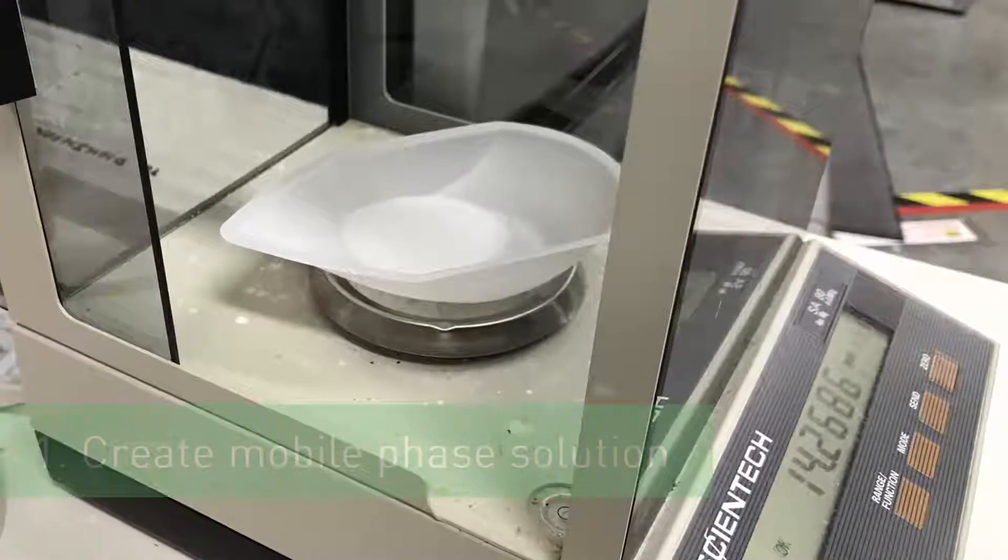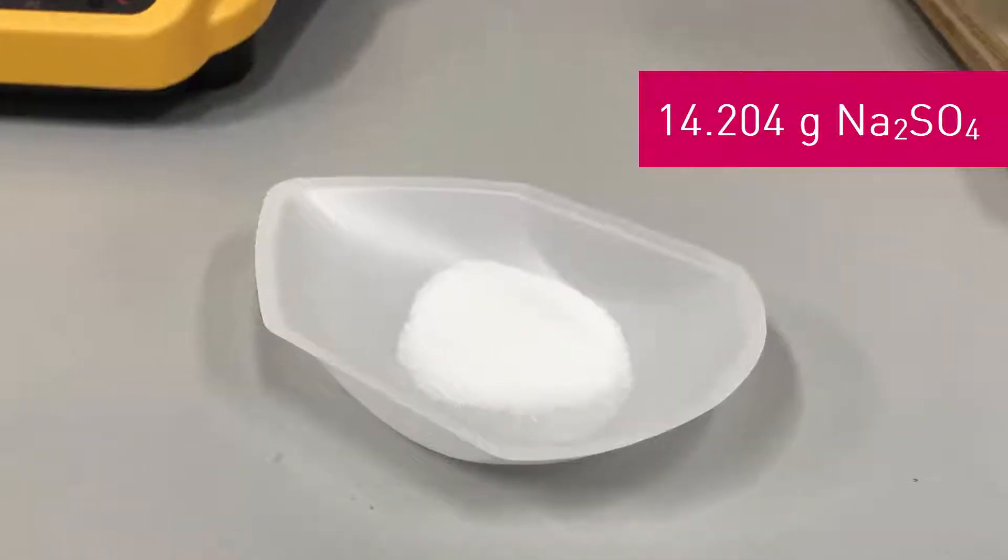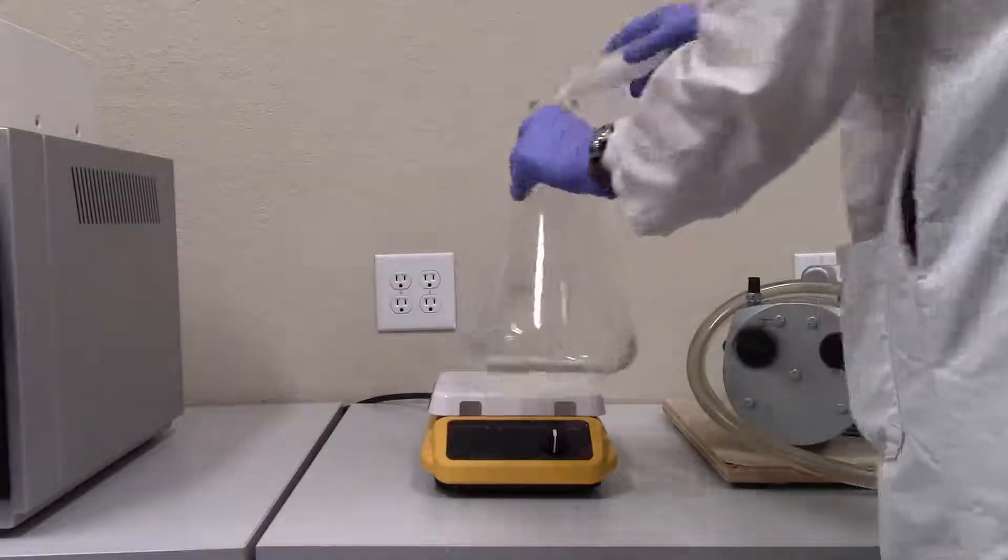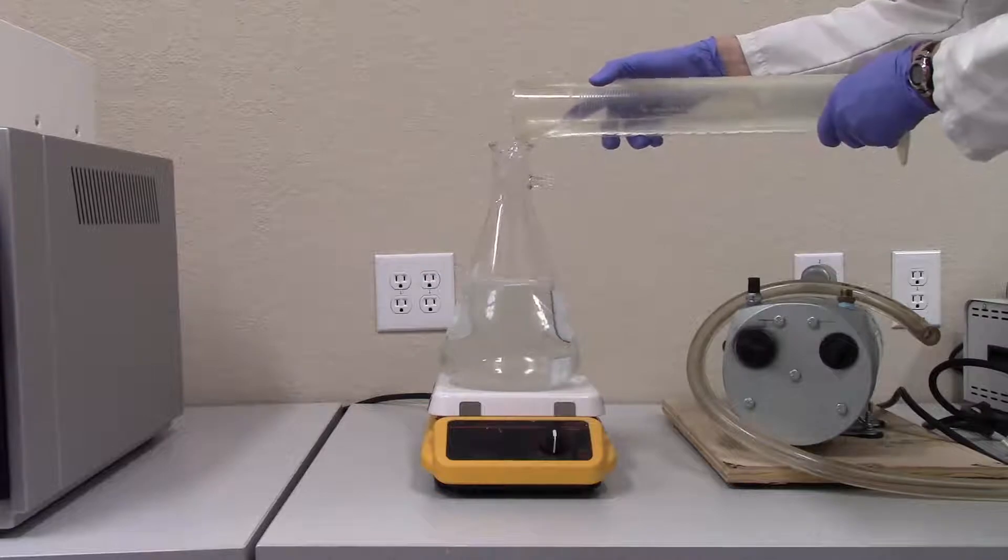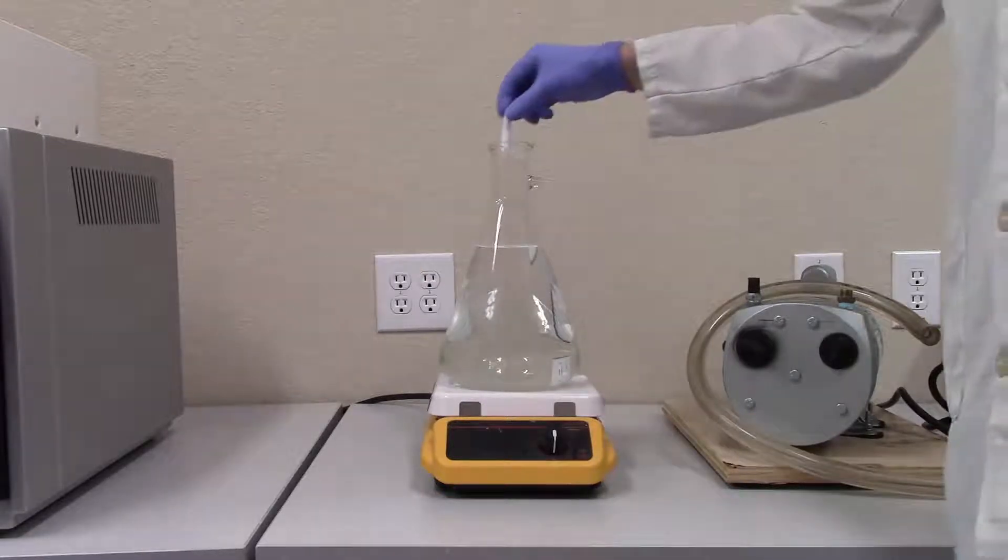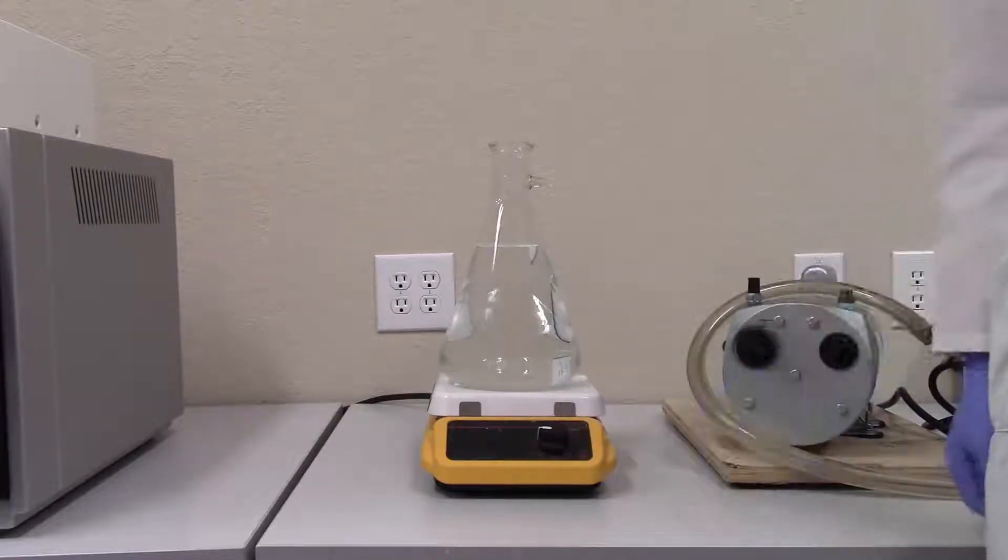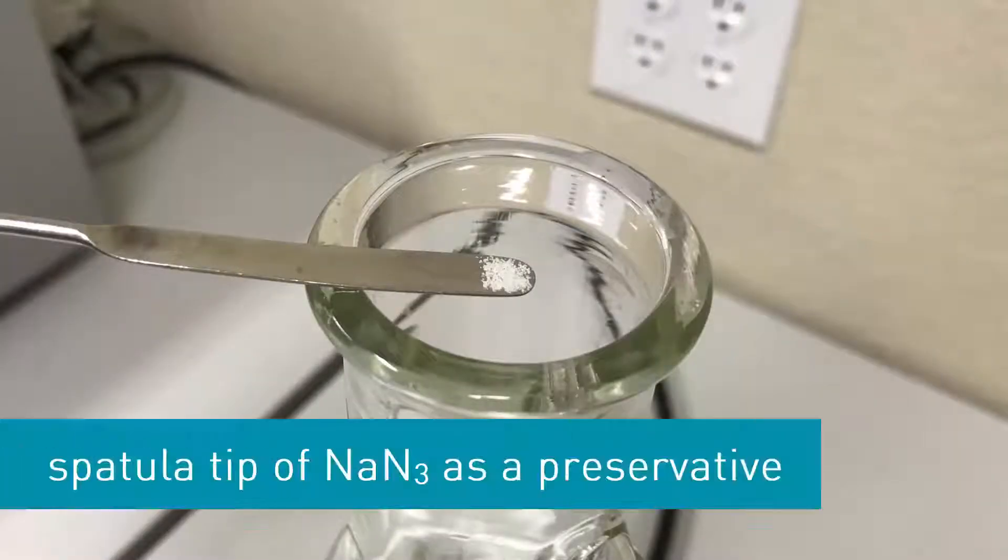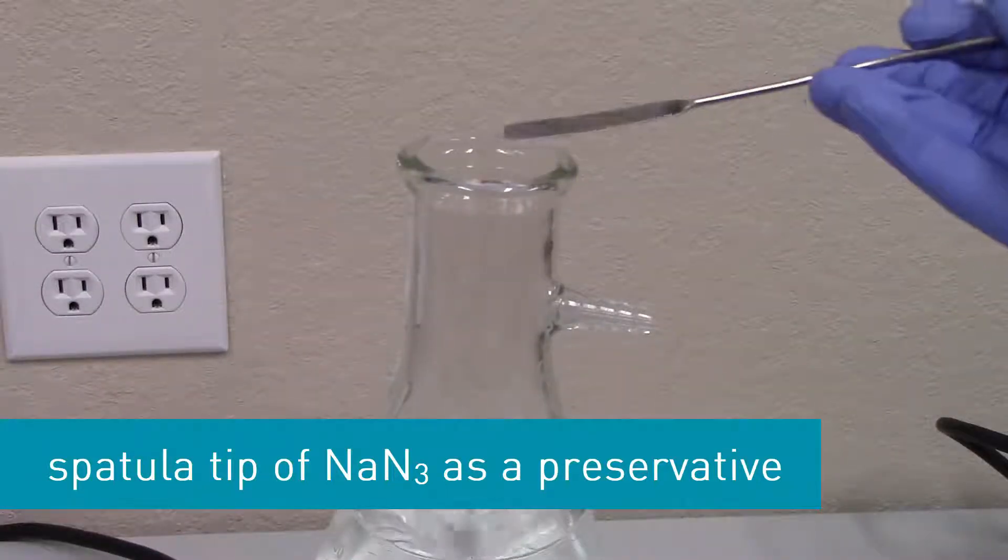I've pre-weighed the appropriate amount of sodium sulfate to generate 2 liters of a 0.05 molar solution. I'll add that to my mixing flask, add 2 liters of distilled or deionized water, and then let the solution stir gently to completely dissolve. Since this is an aqueous mobile phase, I will also add a spatula tip of sodium azide to act as a preservative.